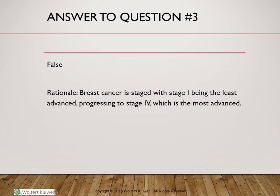Breast cancer staging uses the TNM system — T for tumor, N for level of lymph node involvement, and M for metastasis. Stage one is the least advanced, with stages two, three, and four representing increasing advancement. Stage four is the most advanced.